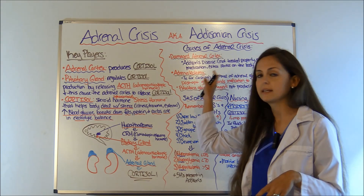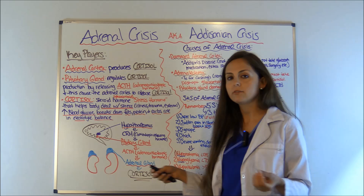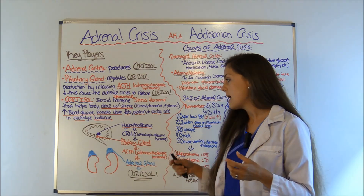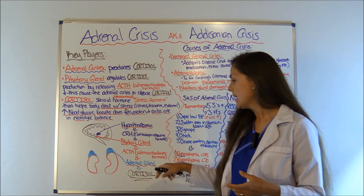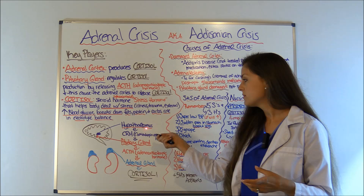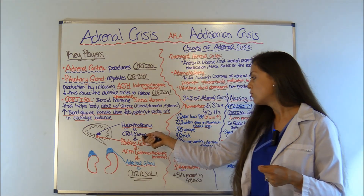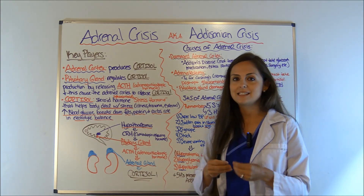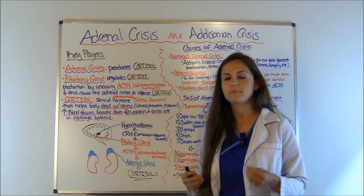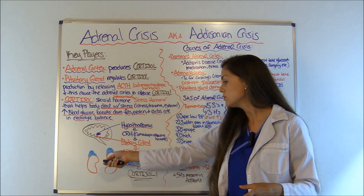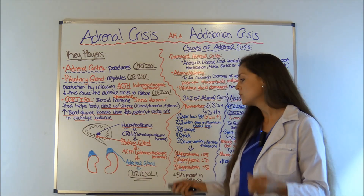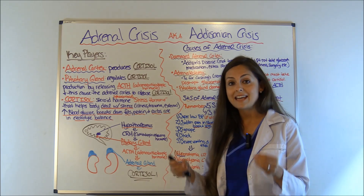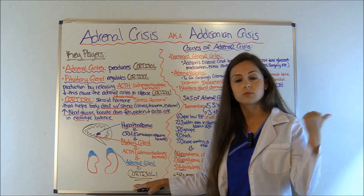Now let's go over the negative feedback loop, because it'll help make sense of the causes. In your brain, you have your hypothalamus, and below that the pituitary gland. The hypothalamus releases CRH (corticotropin-releasing hormone), which causes the pituitary gland to release ACTH (adrenocorticotropic hormone). That ACTH signals the adrenal cortex — on top of your kidneys — to release cortisol. If there's any problem with the pituitary gland releasing ACTH, this can really mess up your cortisol levels.